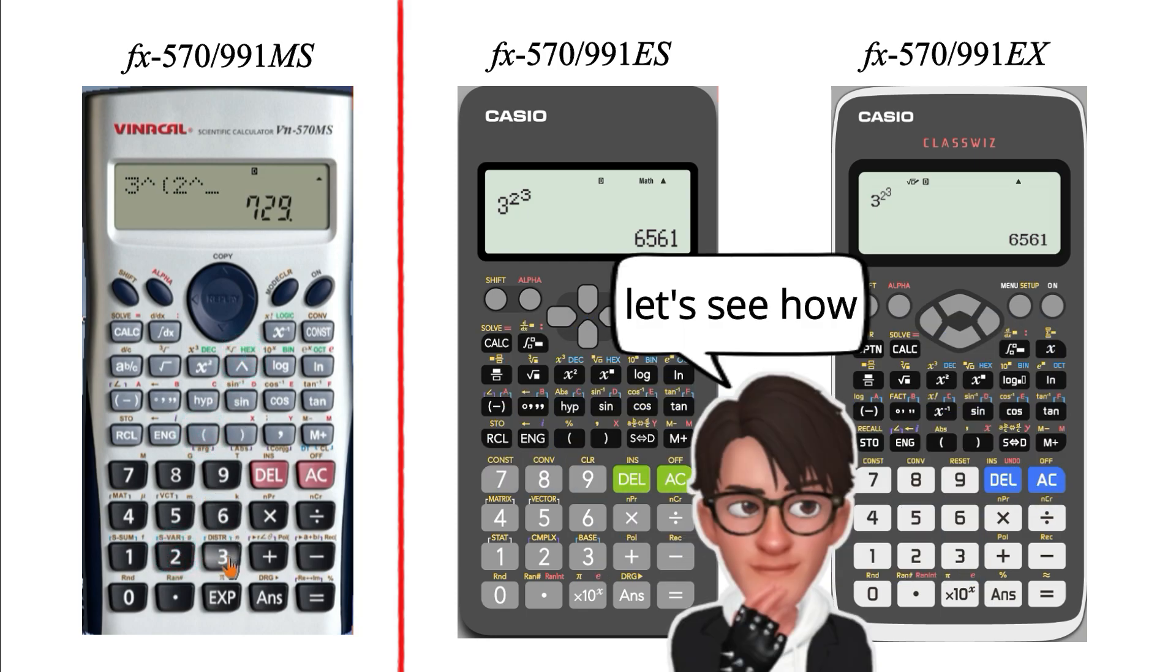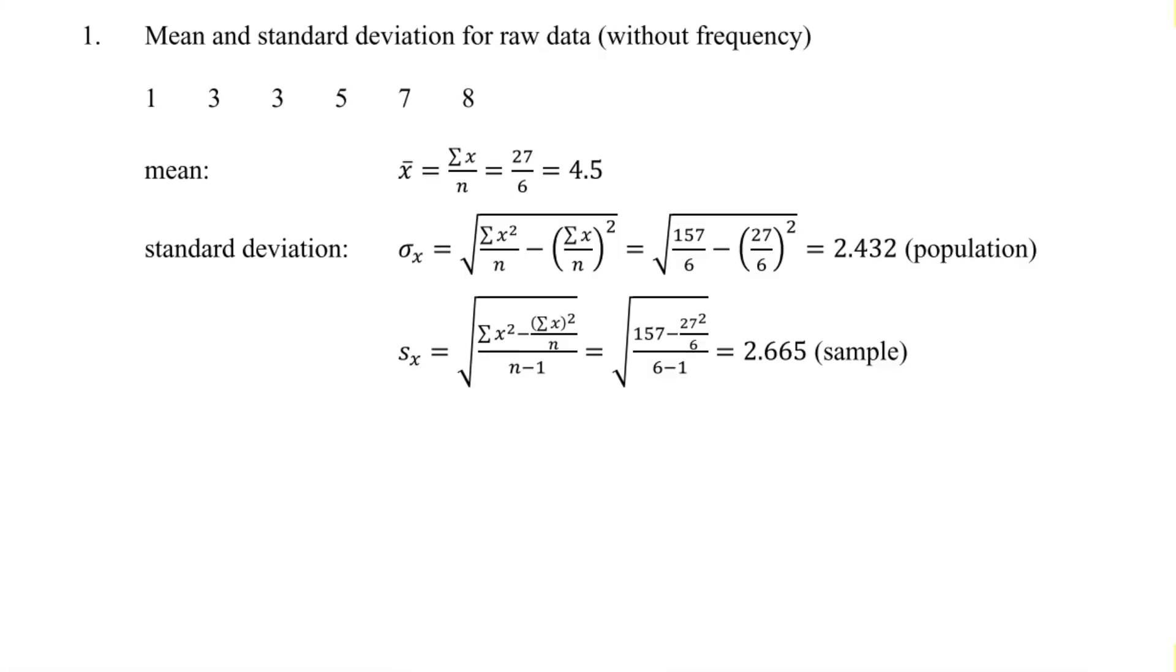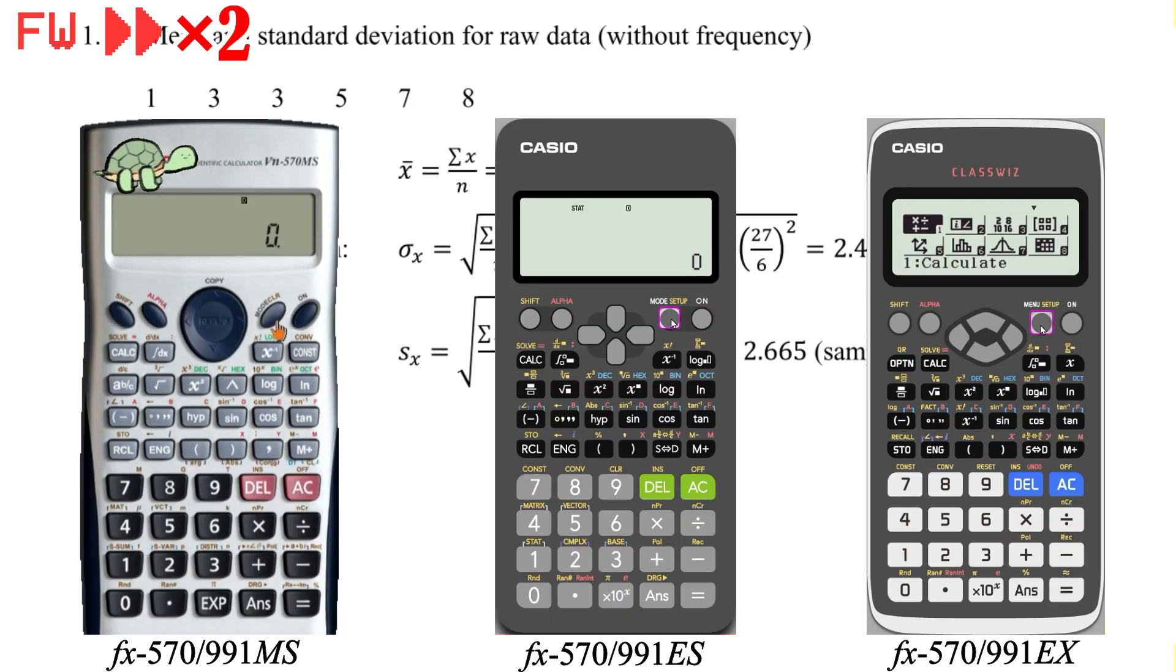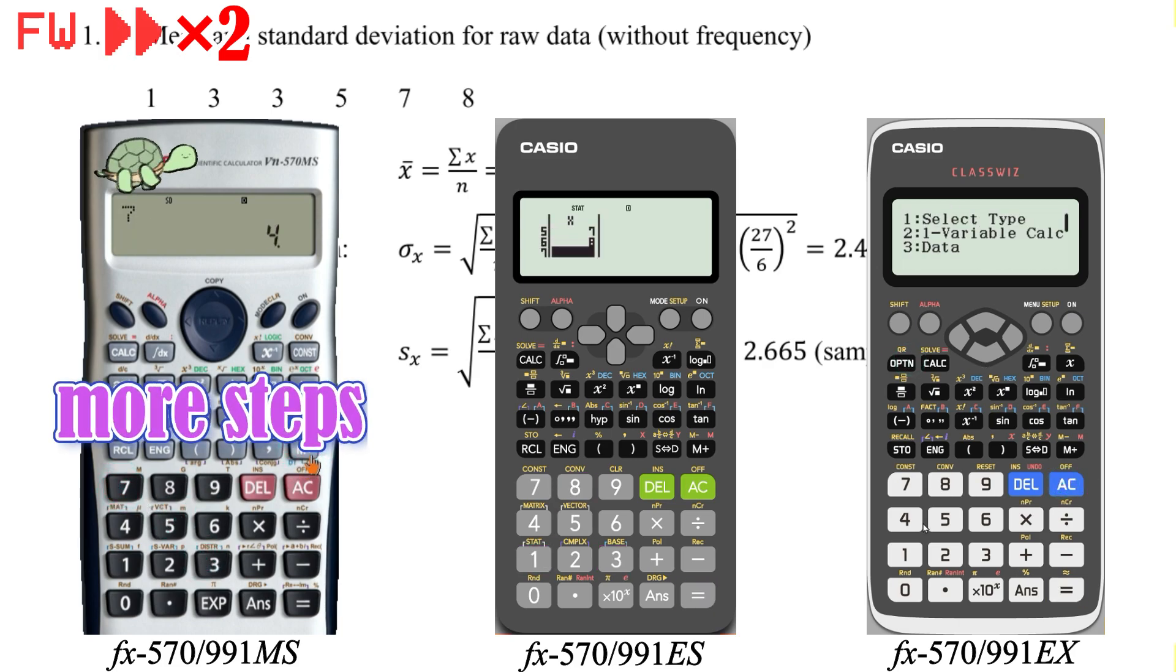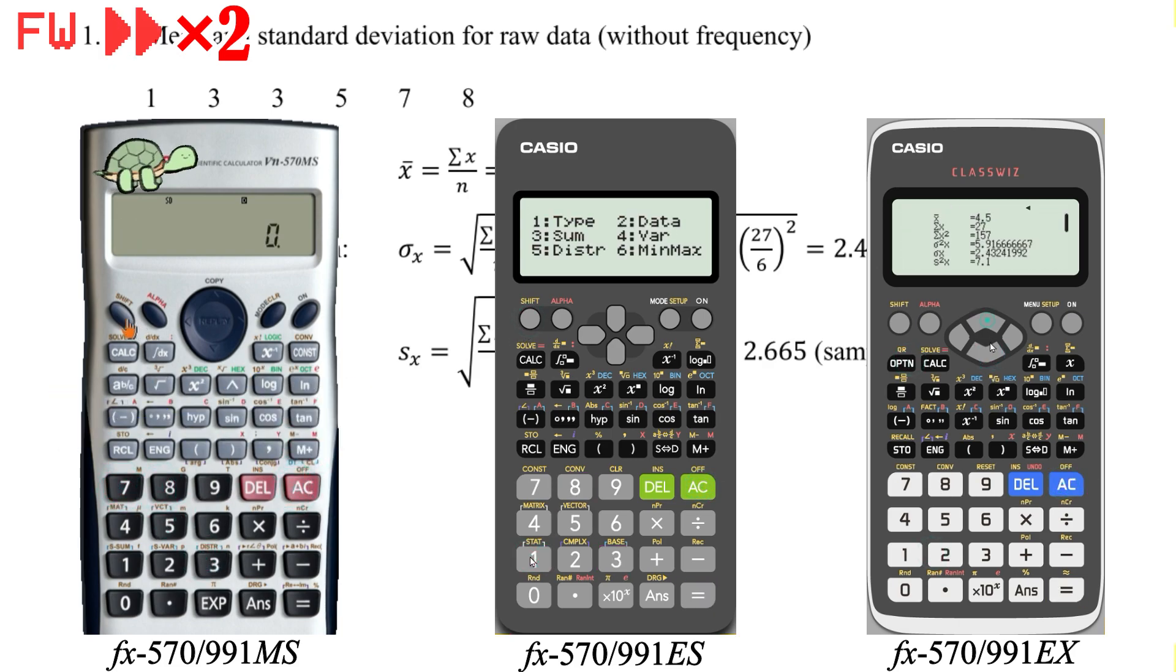Let's see how different calculator models handle the same problem. First, let's consider the most common task of finding the mean and standard deviation. We can see that the FX570-MS model involves relatively more steps, while the FX570-991-EX model is much easier to use.